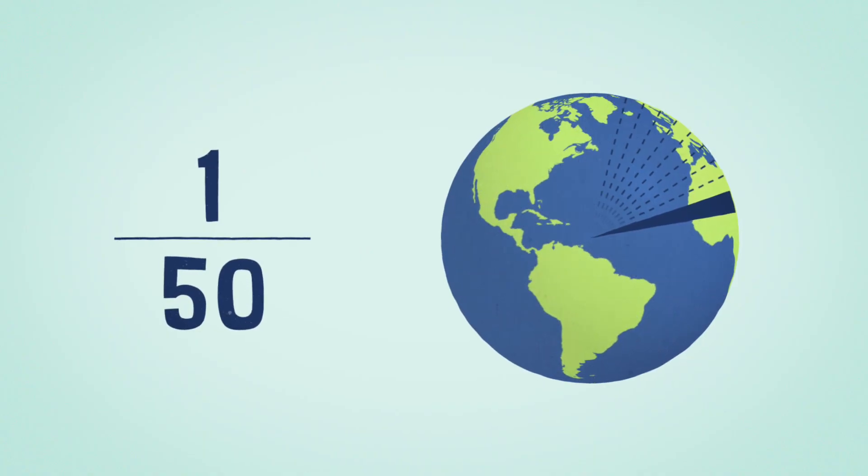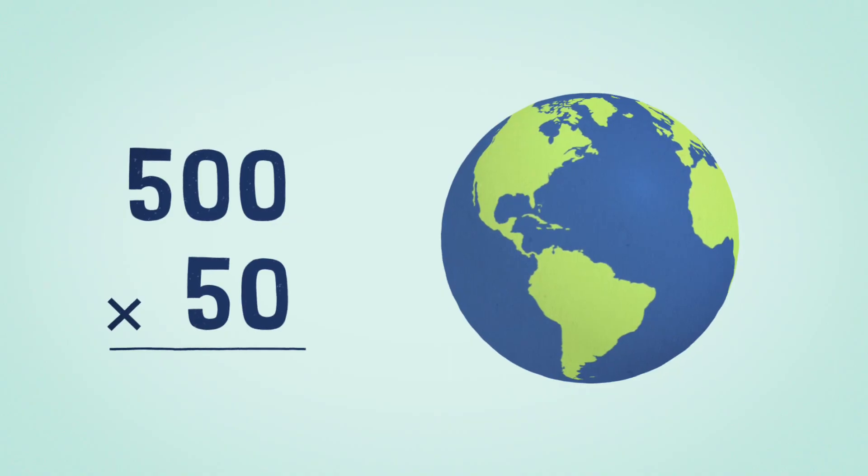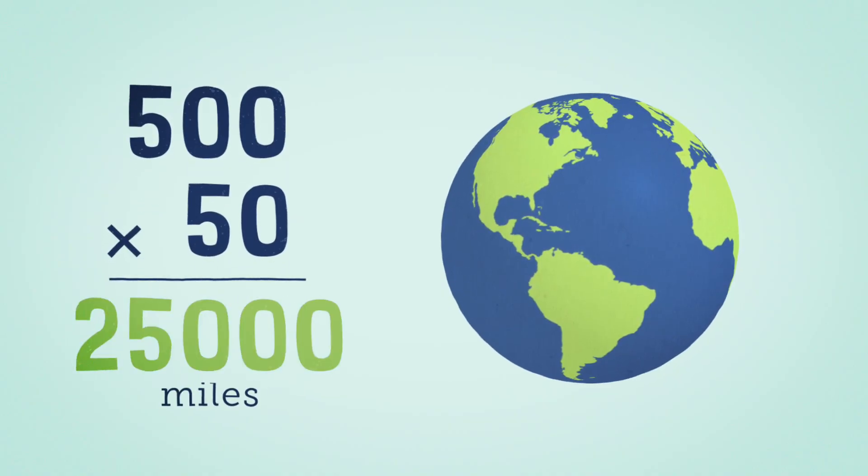So knowing the cities were 500 miles apart, he concluded that the radius would be 50 times 500 miles for a measurement of 25,000. He was only off by 99 miles.